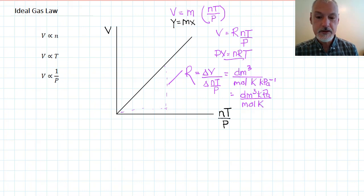And if we use these particular units, meaning that our volume is in decimeters cubed, our pressure has to be in kilopascals, and our temperature has to be in kelvin, then we get the value for R as being 8.31.